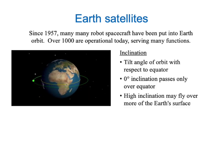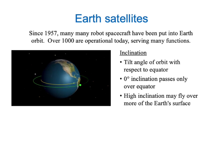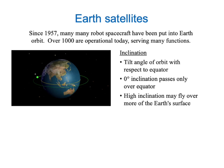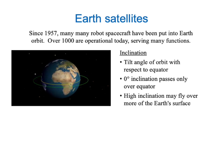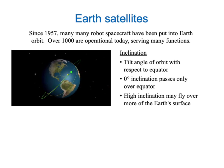The next important orbital characteristic is the inclination of the orbit. That's the angle between the orbital plane and the equator of the Earth. A satellite with an inclination of zero degrees only passes over places on the equator.